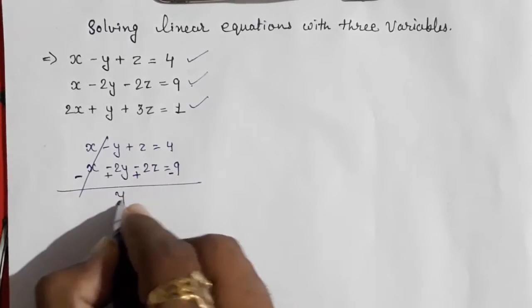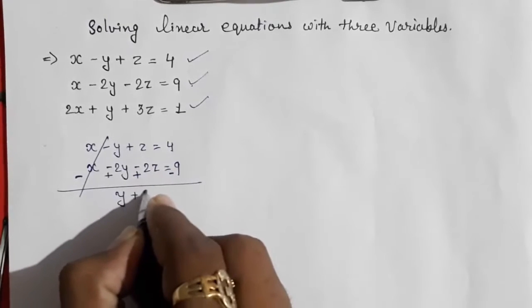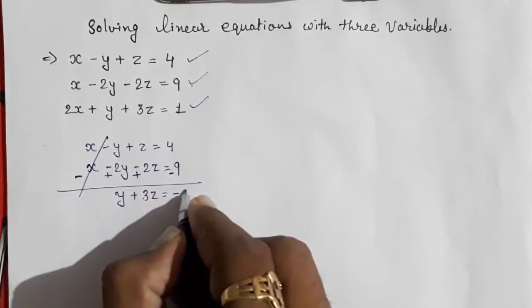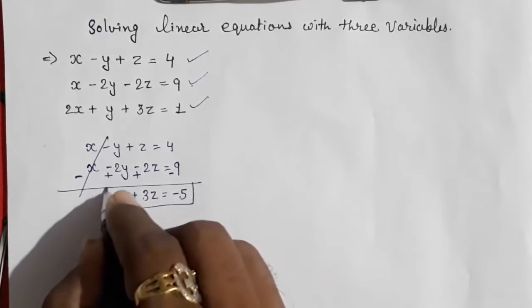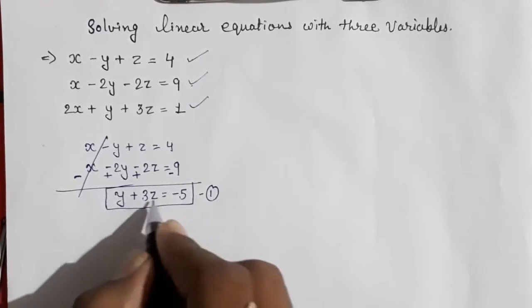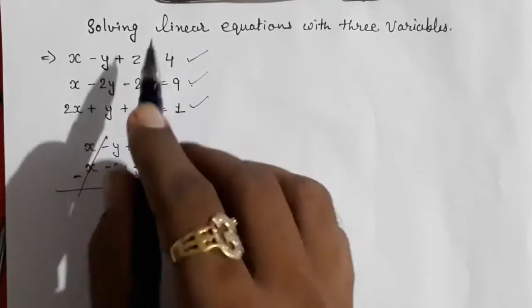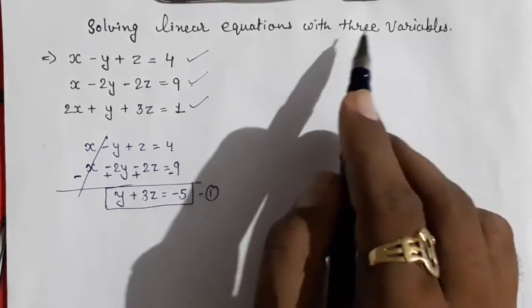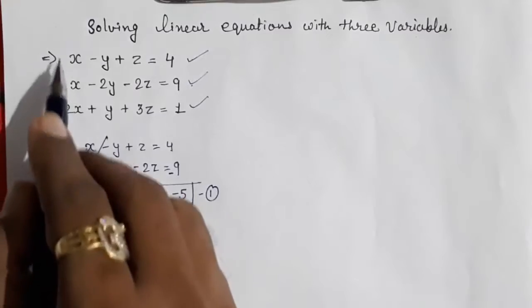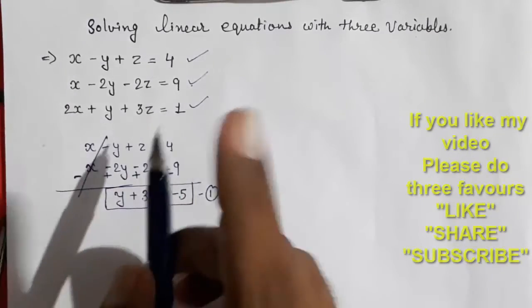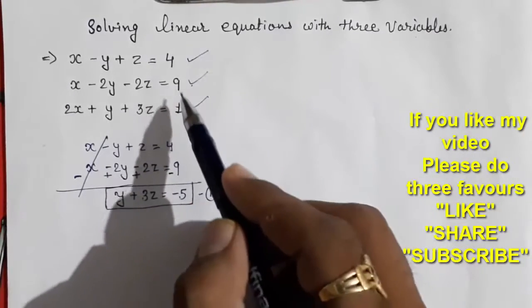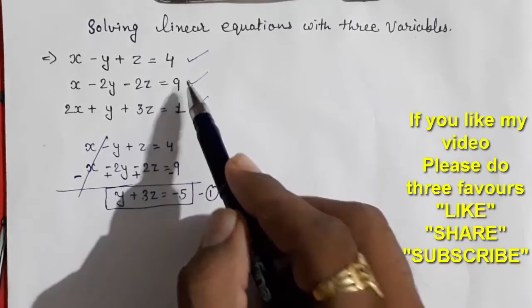We get y plus 3z is equal to minus 5. This is our first resulting equation having only two variables. We have successfully eliminated one variable from the three, and now we need to eliminate from the first and third equations.